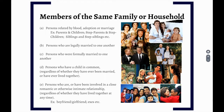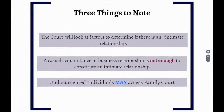This includes boyfriends and girlfriends. The court will look at factors to determine if there is an intimate relationship, such as the nature and type of relationship regardless of whether it is sexual in nature, the frequency of interaction between the persons, and the duration of the relationship. A casual acquaintance or business relationship is not enough to constitute an intimate relationship. Finally, undocumented individuals may access the family court — the court should not ask about immigration status when determining whether an OP should be issued.